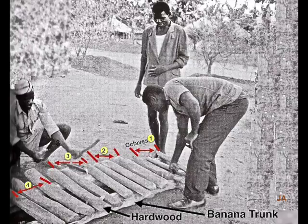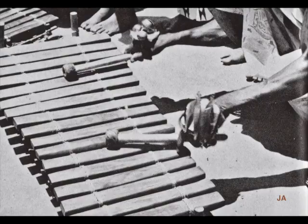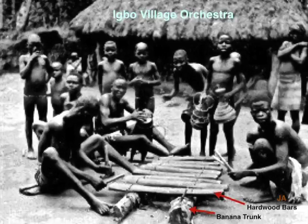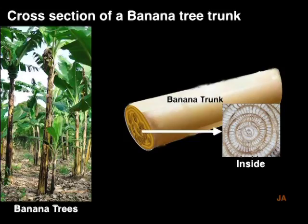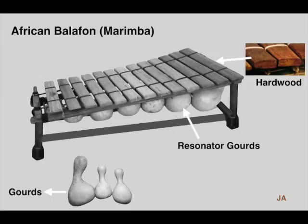African xylophones have different names in many parts of the continent. Typically, they have 12 keys arranged in a pentatonic scale, consisting of wooden bars struck by sticks. The bars are placed atop two horizontal banana trunks as the main frame, which is spongy and contains air pockets, isolating the bars. The xylophone has attached resonators, chosen according to their sizes to achieve the desired tone.